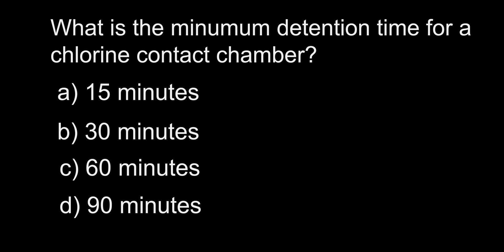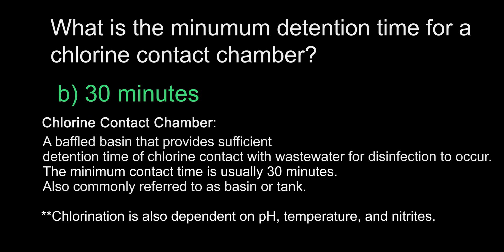What is the minimum detention time for a chlorine contact chamber? A. 15 minutes, B. 30 minutes, C. 60 minutes, D. 90 minutes. The answer is B, 30 minutes. This is a rule of thumb, and the definition on screen is directly taken from the Sacramento State College textbook, Operation of Wastewater Treatment Plants. However, what is taught in textbooks doesn't always apply to every situation or treatment plant. It's important to understand that chlorine contact time is influenced by factors such as pH, temperature, and nitrites.